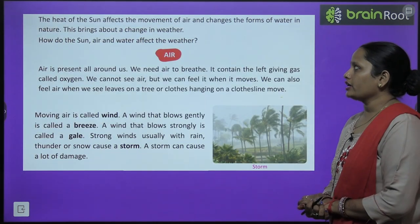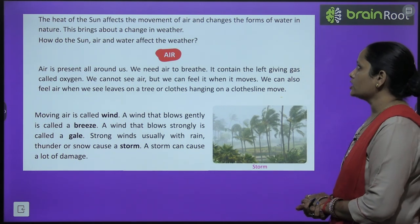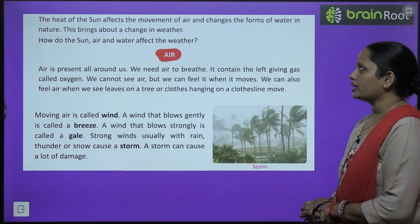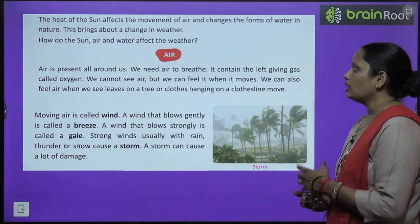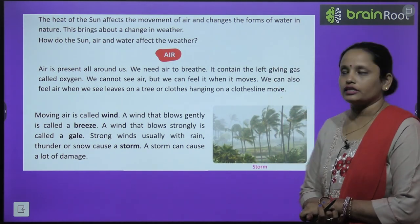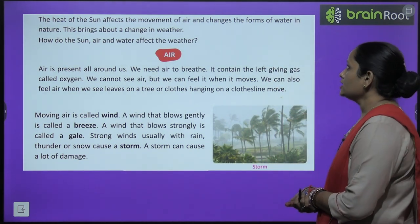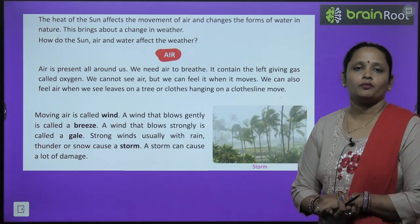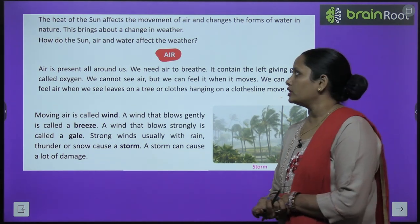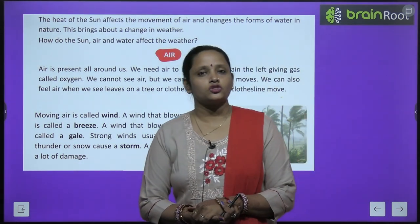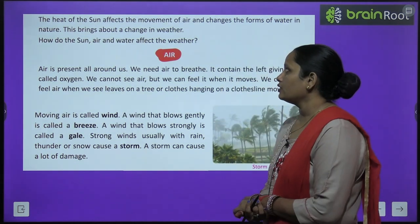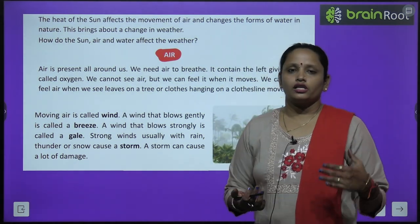The heat of the sun affects the movement of air and changes the form of water in nature. The heat of the sun changes the form of water, which changes the weather. How do the sun, air and water affect the weather?